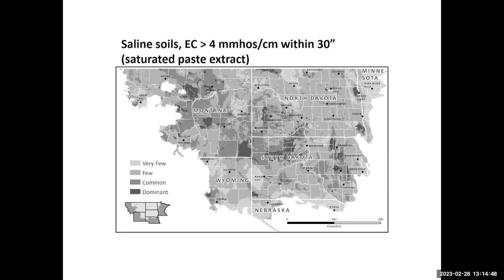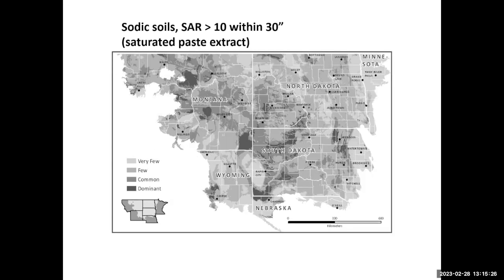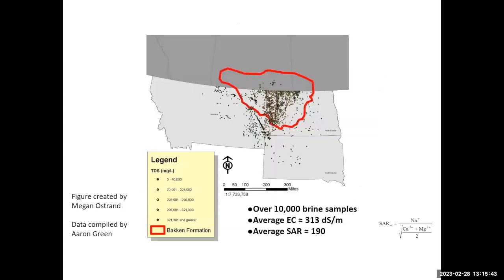This map produced by Joe Brennan with NRCS shows the distribution of saline soils — the darker the color, the more common they are. There's significant coverage in eastern North Dakota and parts of Montana. There are about seven million acres of saline soils in North Dakota. Sodic soils are somewhat less common but still dominate similar landscapes. Eckman County in Montana has a soil actually called Eckman that is sodic.